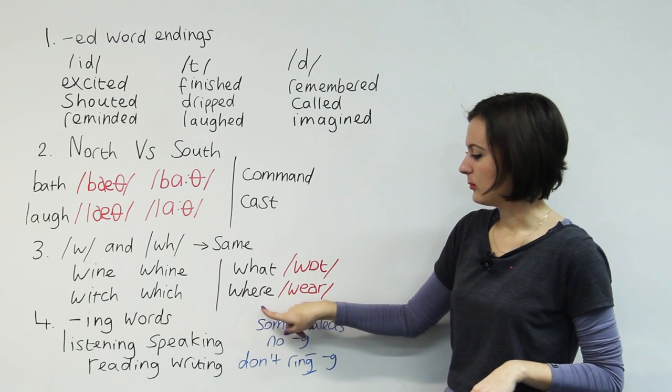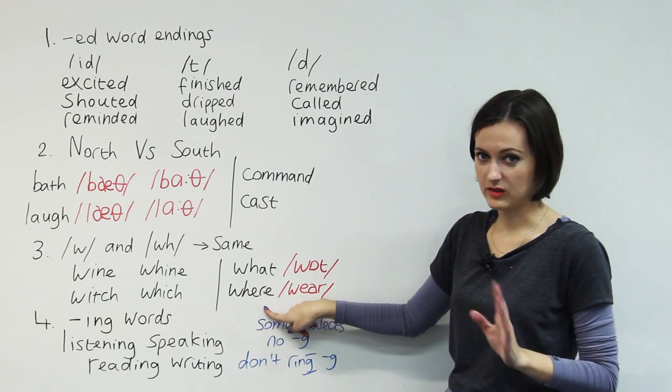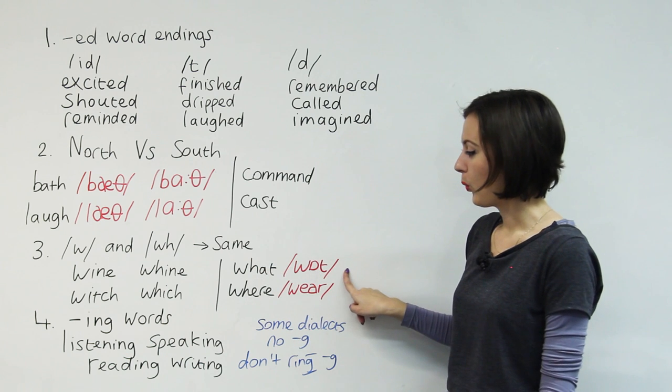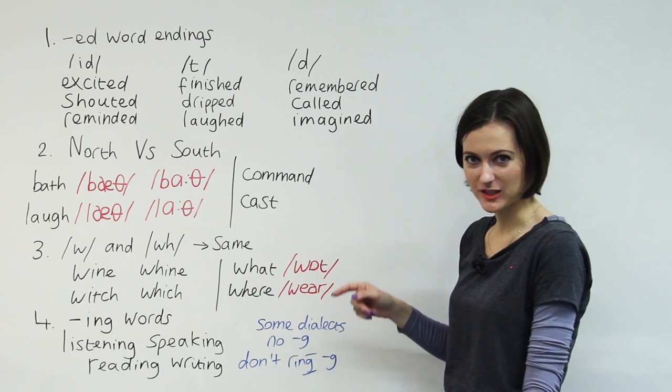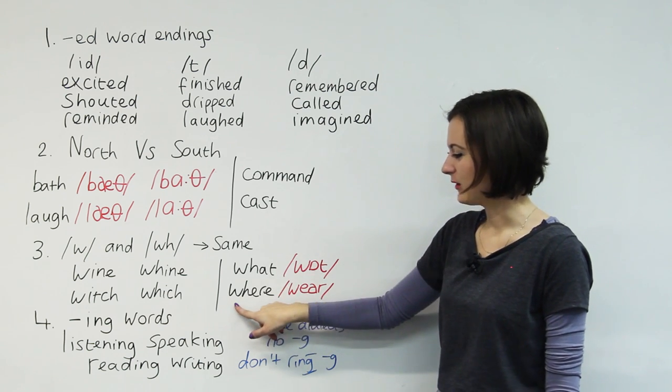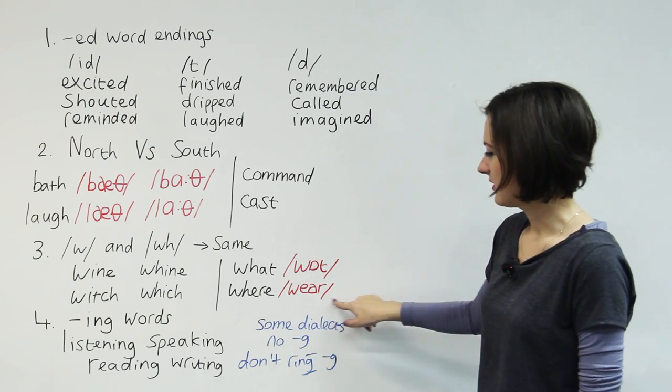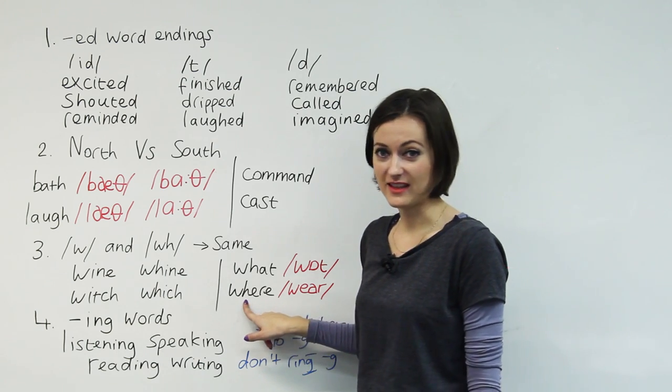So don't be making the WH sound. And here are two commonly spoken words with that WH sound that you shouldn't say. So you should say what, without... what, what do you want? That would be awful. And where, don't say that. Just say it without the H sound.